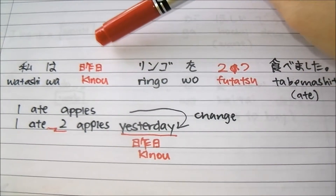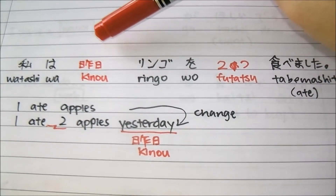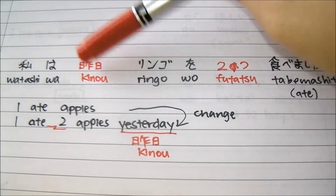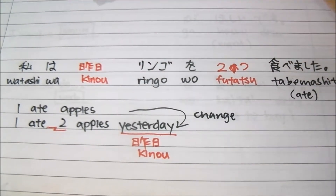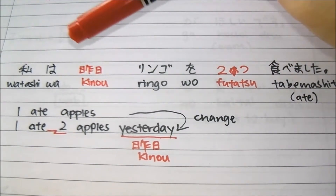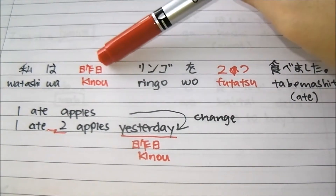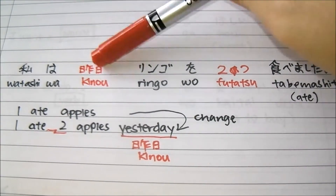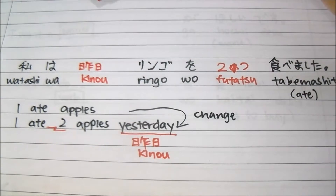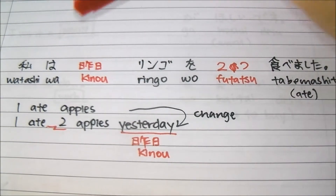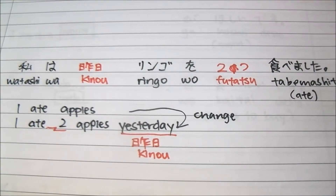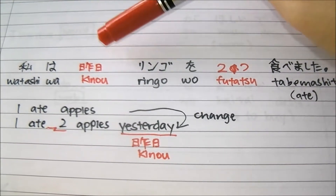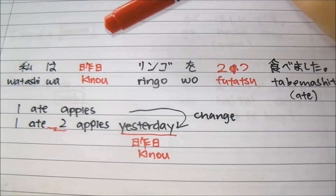For example, you can put today, yesterday, the day before, three days ago. You can put tomorrow, two days later. You can put this week, this month, this year. You can even put right now — 'ima' — and so on.